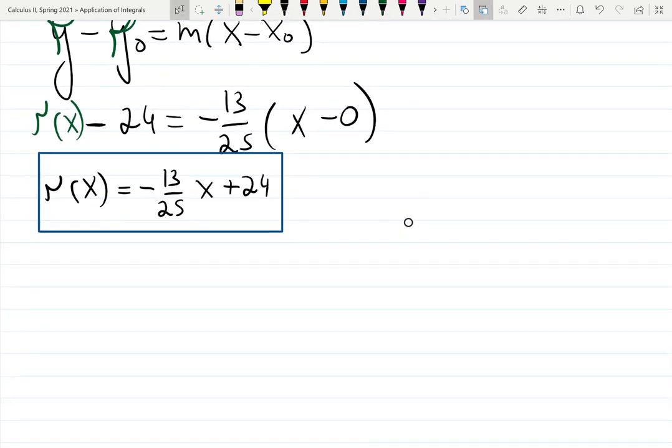You can also check. At zero we had the biggest radius 24. If I plug zero, indeed the radius is 24, matches. When the height was the biggest one, 25, the radius was only 11. If I plug 25, 25 cancels with 25, minus 13 plus 24 indeed is 11, matches. So I think we did good job building the equation of the line.